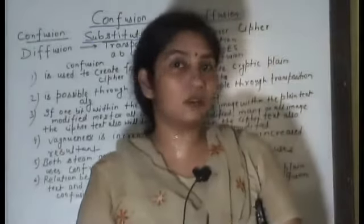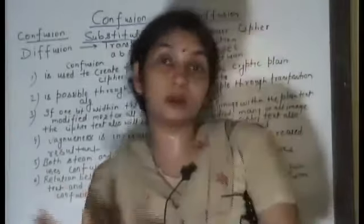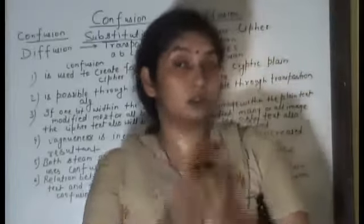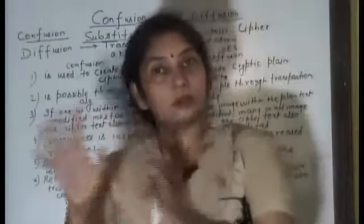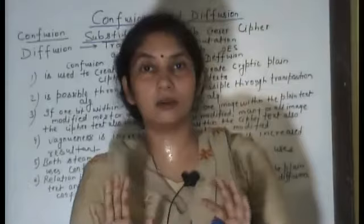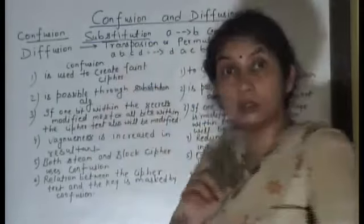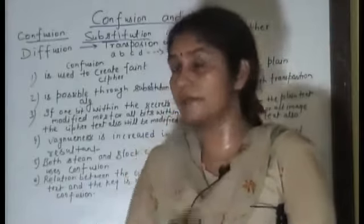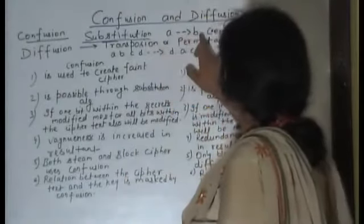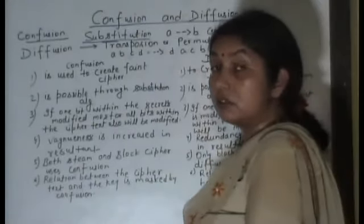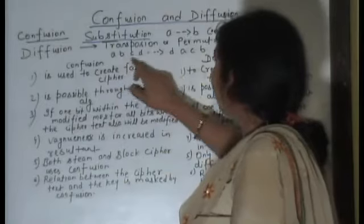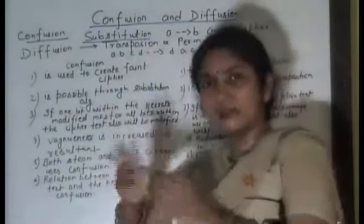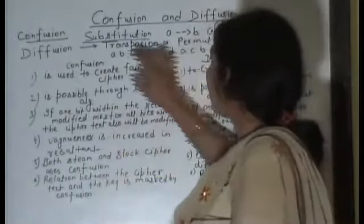So overall, confusion and diffusion both convert plain text to ciphertext. All algorithms that work on substitution will use confusion, and what works on permutation is diffusion. For example, substitution: A replaces with B — this may be called ciphertext. For transposition: A, B, C, D are rearranged in position — this is called permutation, and this is the part of diffusion.